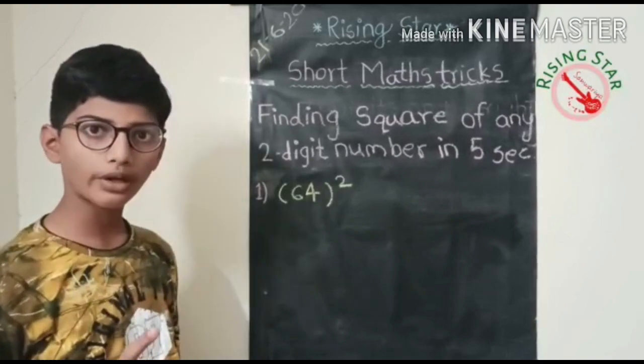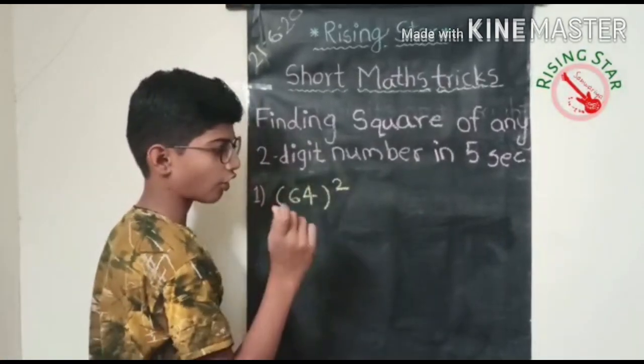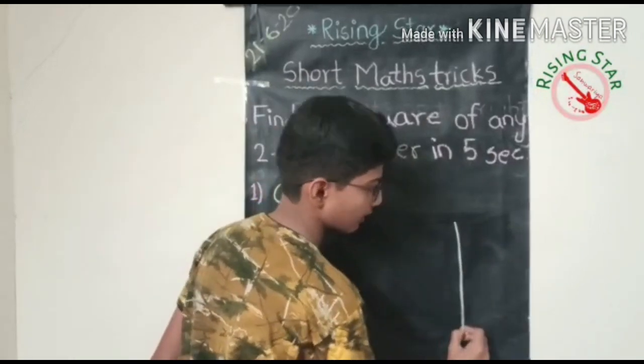But remember, you have to learn squares from one to nine for this trick. So let us begin. First of all, draw two lines like this.